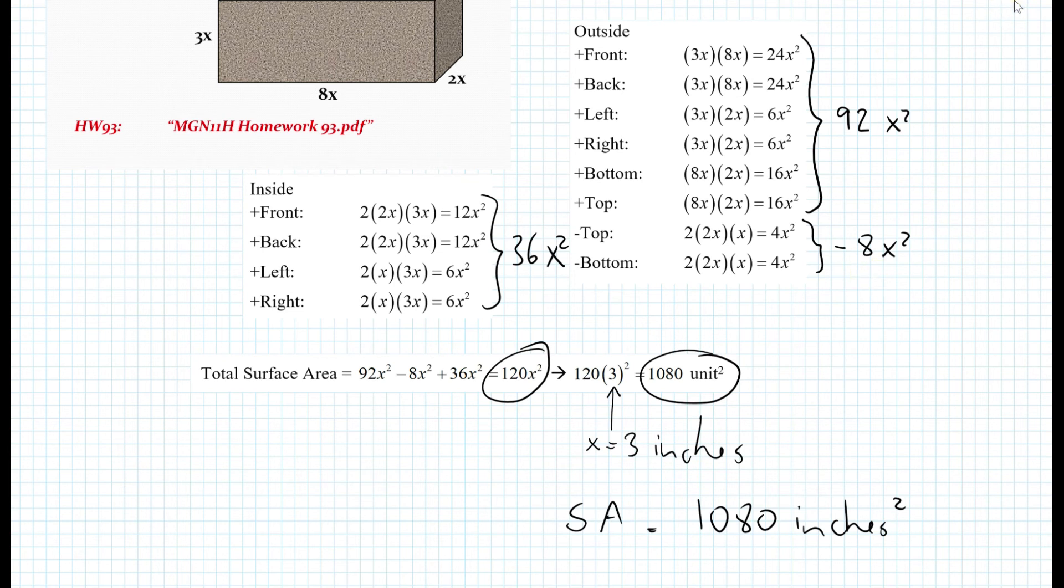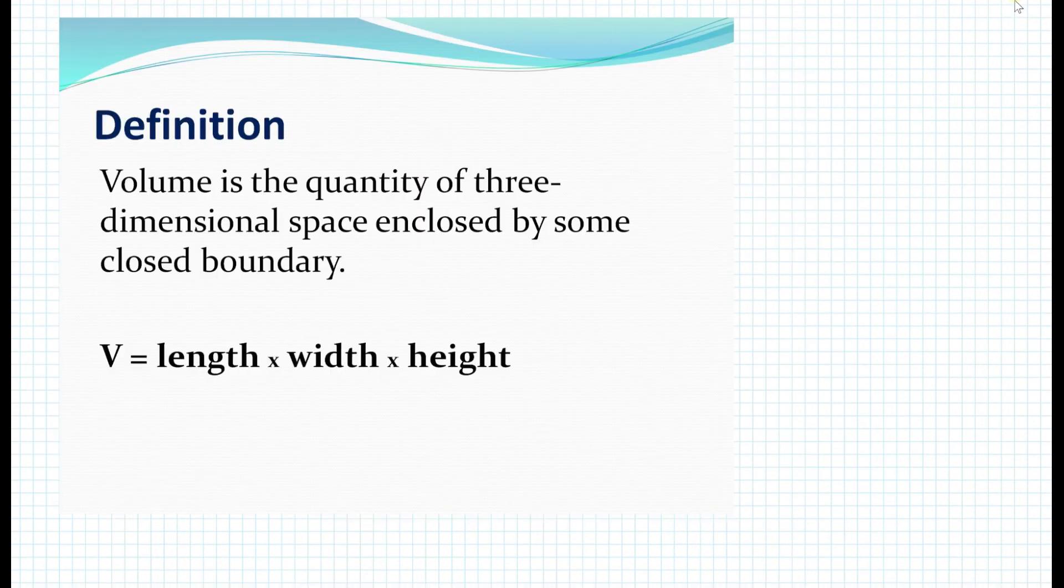So let's quickly define volume and surface area. So the volume is defined as the quantity of three-dimensional space enclosed by some closed boundary. So basically, to find the volume, you just take the product of the length, width, and height of a figure. And keep in mind that here, in this lesson, we're only considering volumes and surface areas of rectangular figures or rectangular prisms of that sort, none of which have rounded surfaces or lateral surface areas.